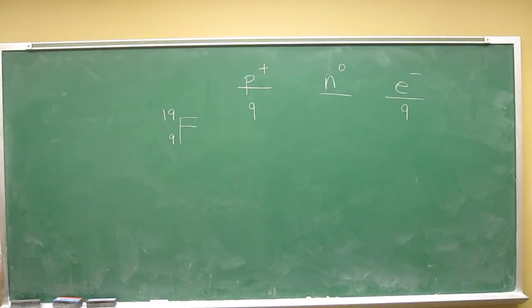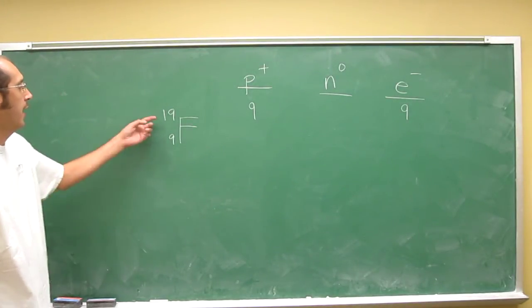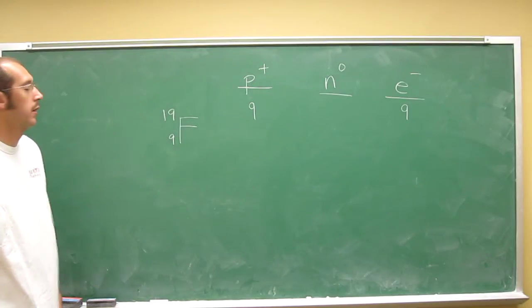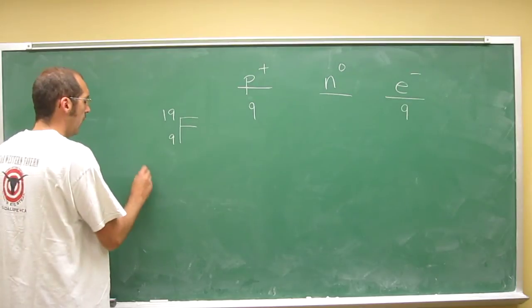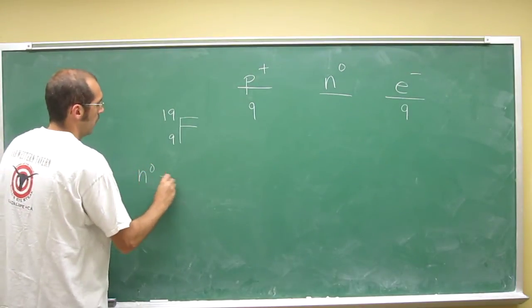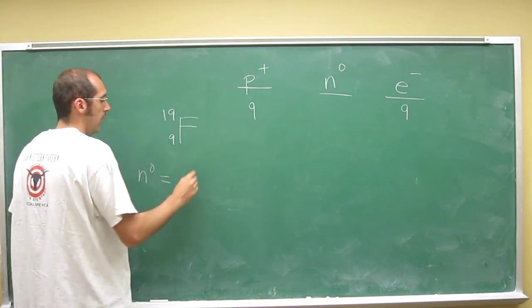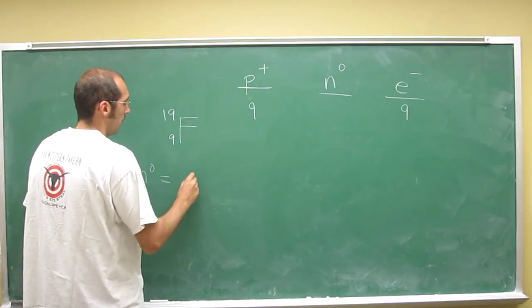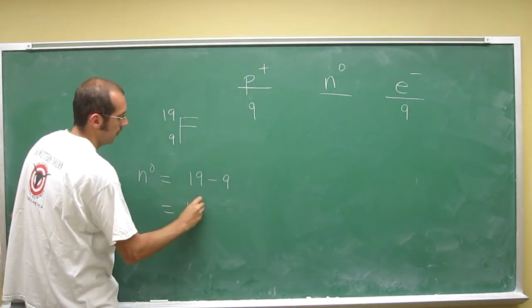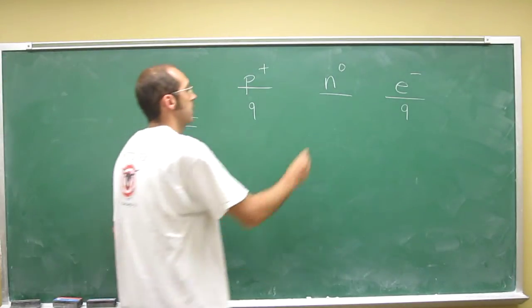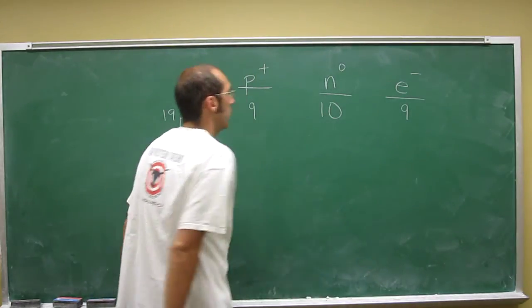And the number of neutrons is just the mass number minus the number of protons. So 19 minus nine, of course, is going to be 10. OK, so that's the number of neutrons.